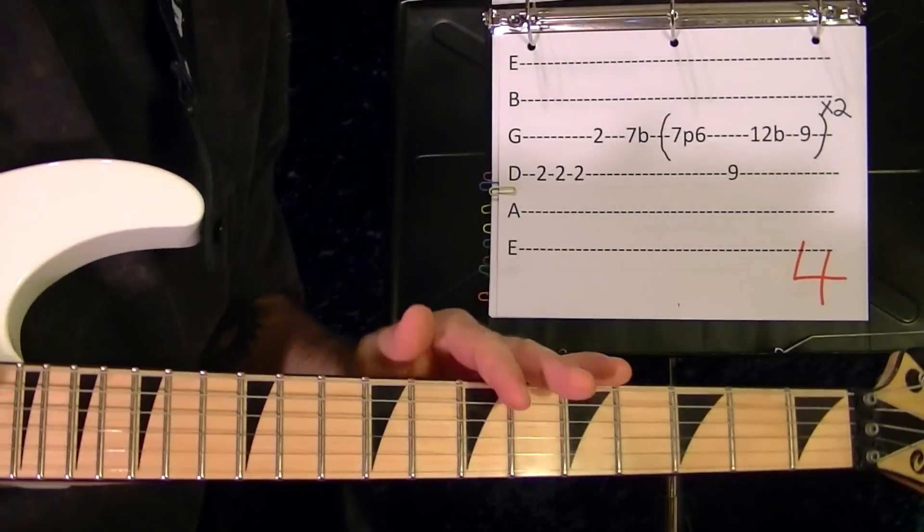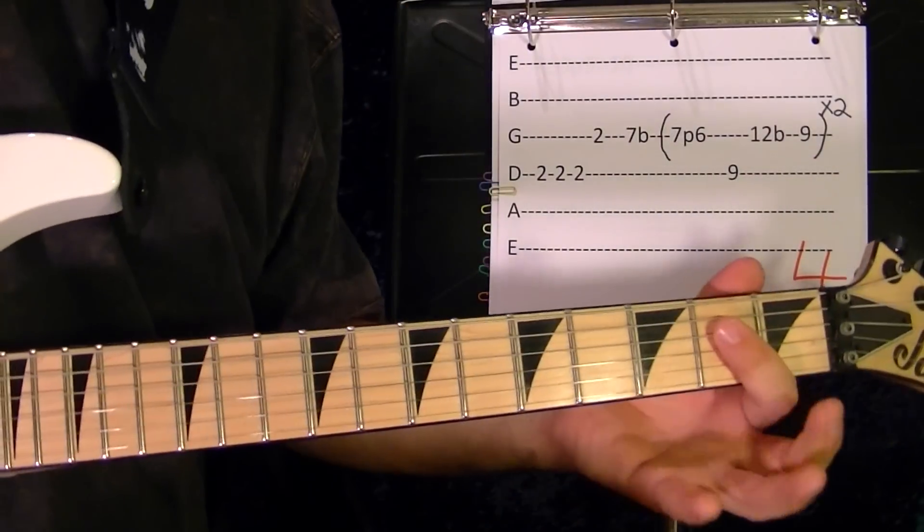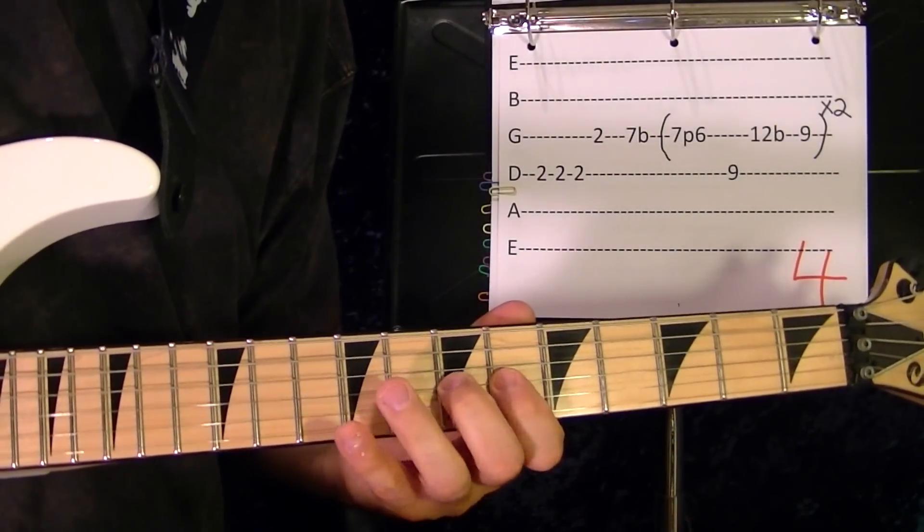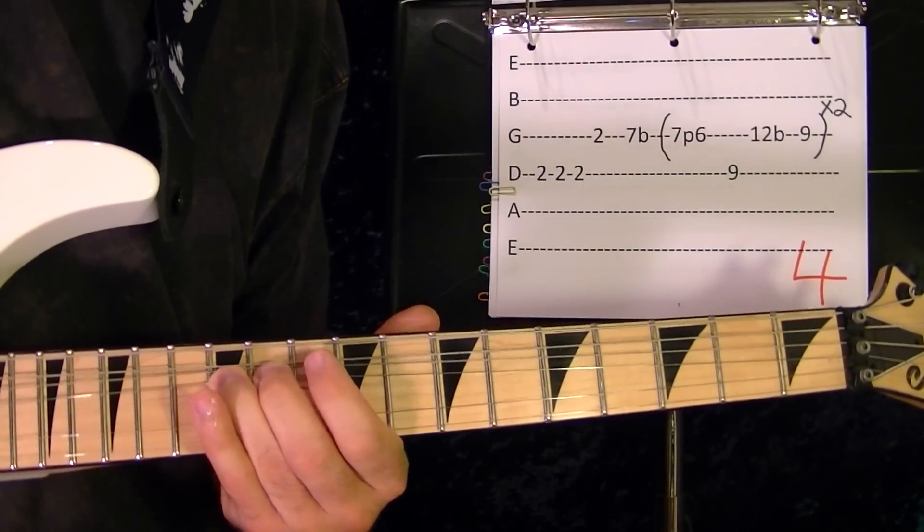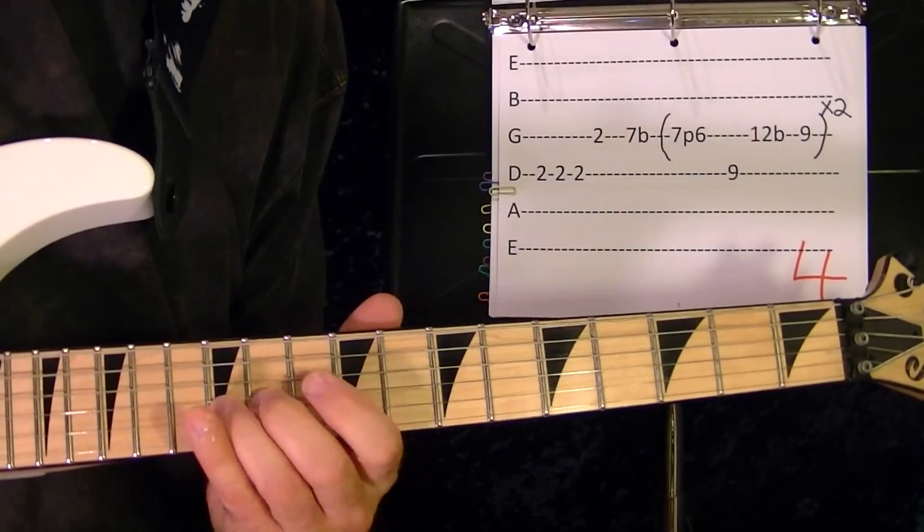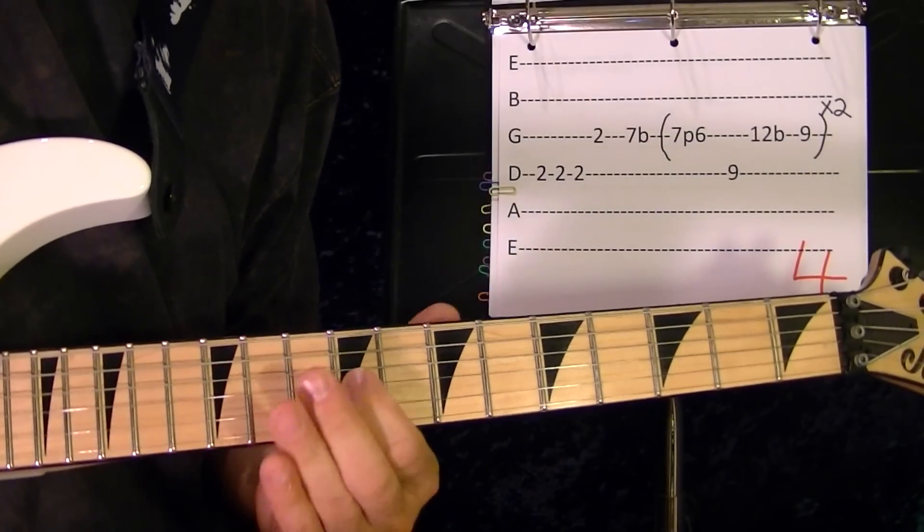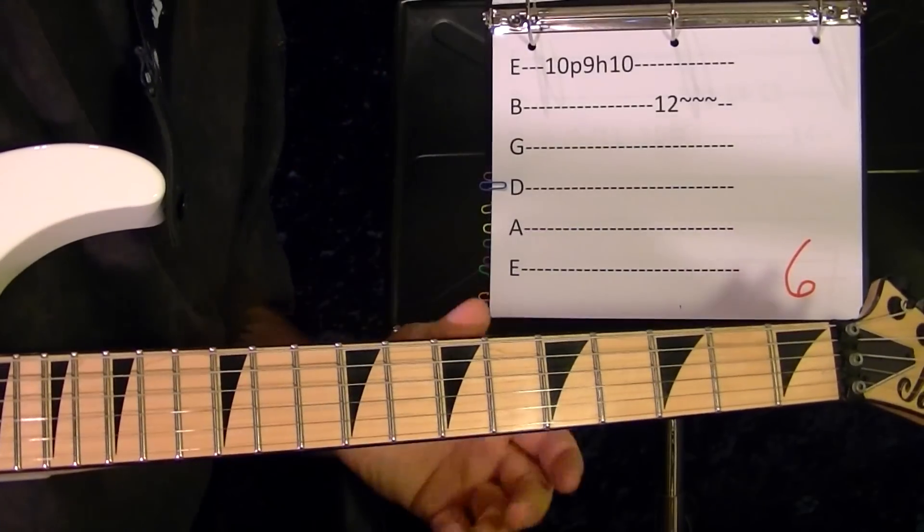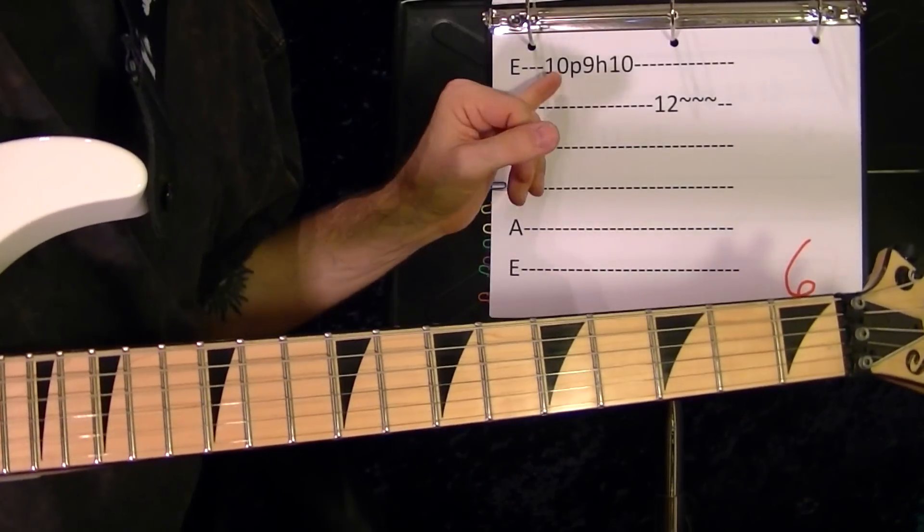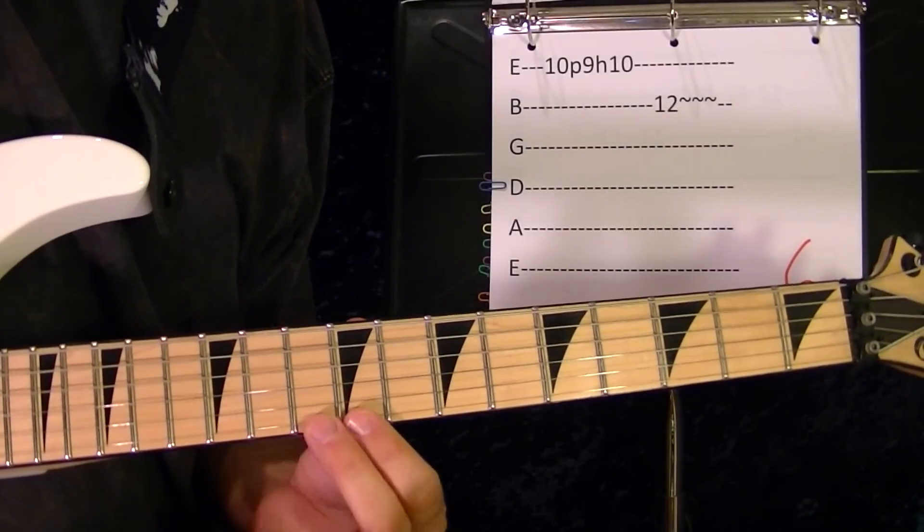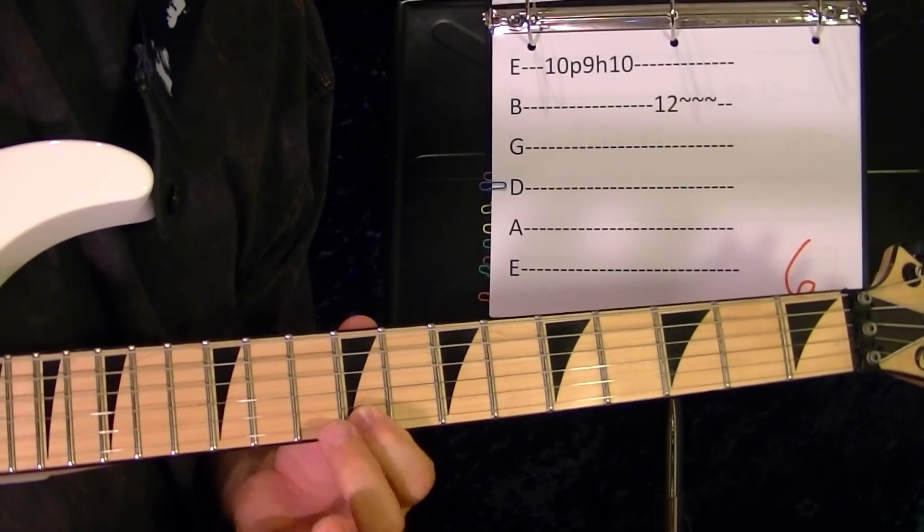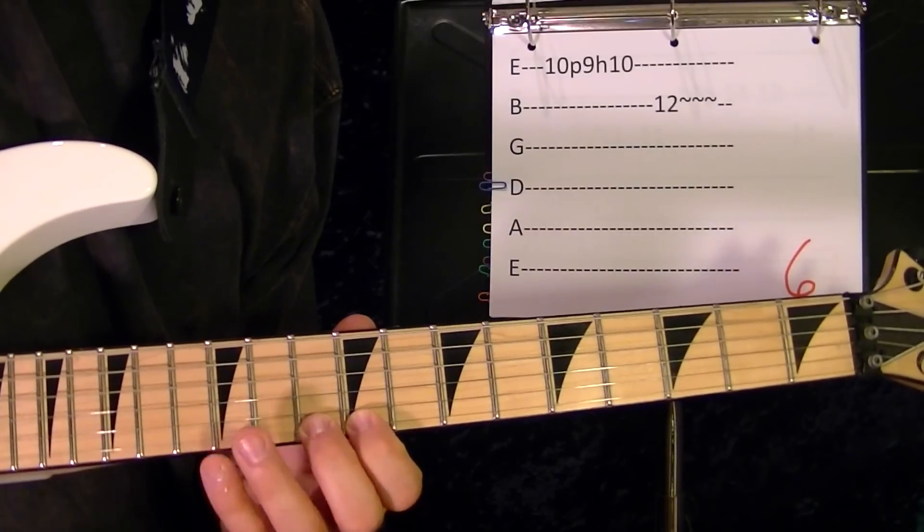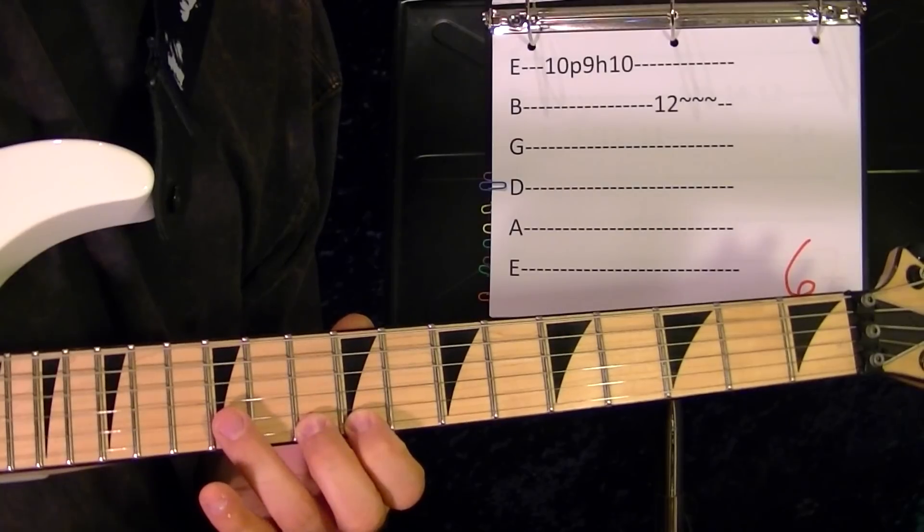Okay, the fourth riff I just explained before. To the first string tenth fret pull off the ninth, back onto the tenth, second string twelfth fret.